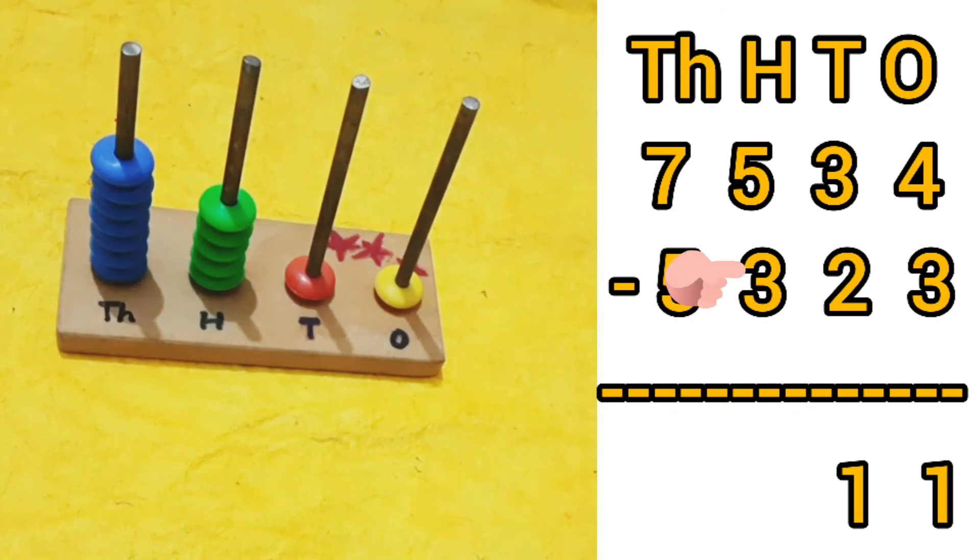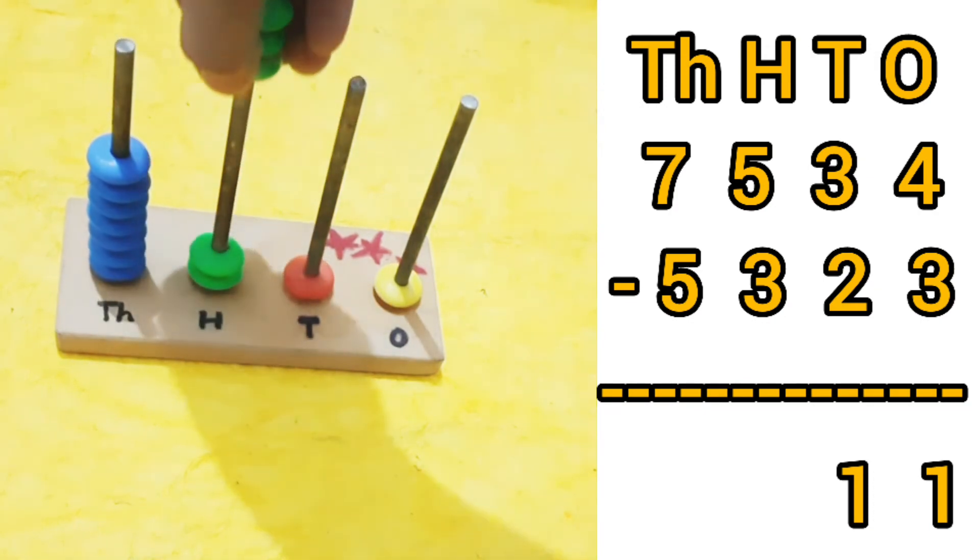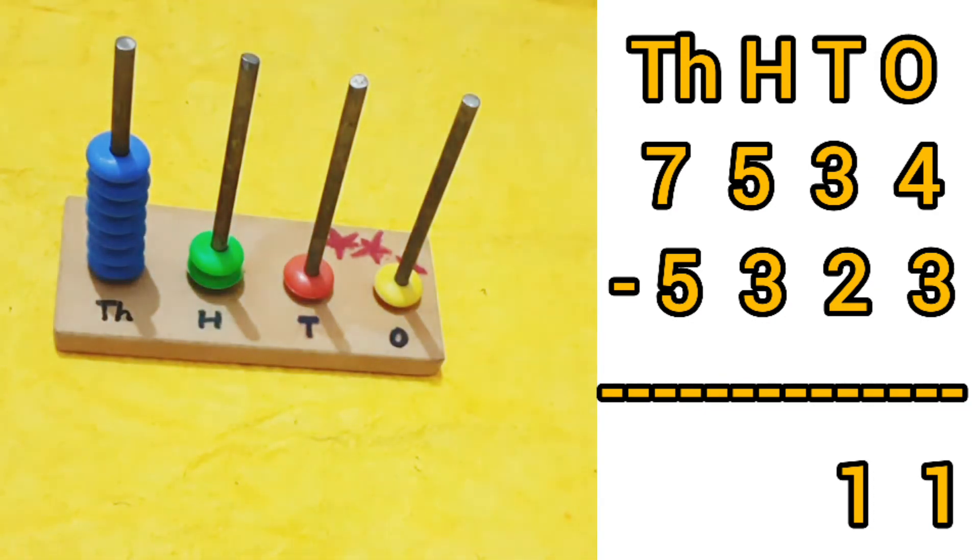Now we will remove three green beads from the hundreds place, as three is at the hundreds place. So five minus three is equal to two.